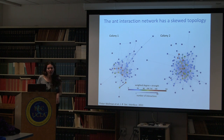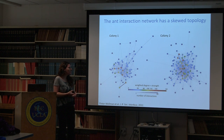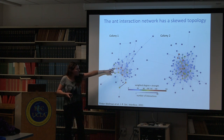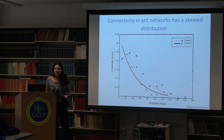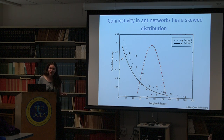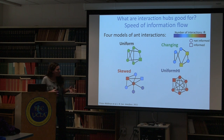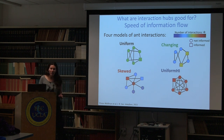When we look at actual interaction networks of ants - each node is an ant, each line is an interaction, and color codes the number of interactions - we see just a few individuals in each colony that are highly interactive while most are not. The distribution of interactions is right-skewed. A model showed that these skewed networks are indeed faster at transmitting information within the colony compared to uniform networks.